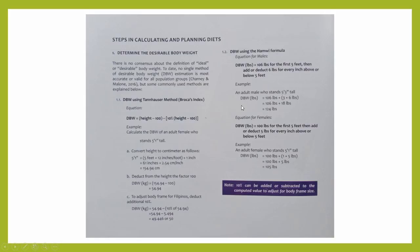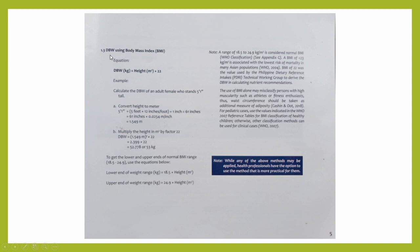We will start first with the calculation. The steps in calculating and planning the diet is still here, which starts at the determination of the desirable body weight. This is also the reference I used for the video 'How to Calculate Ideal Body Weight,' which includes the calculation of desirable body weight using the Tannhoser method, using the Hamui formula, and the calculation of ideal body weight using body mass index. One change I noticed while scanning the latest food exchange list is the value used in the calculation of ideal body weight using body mass index.